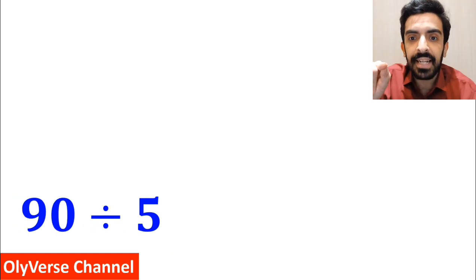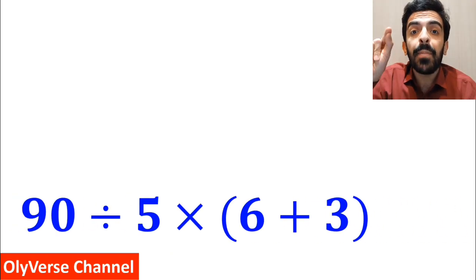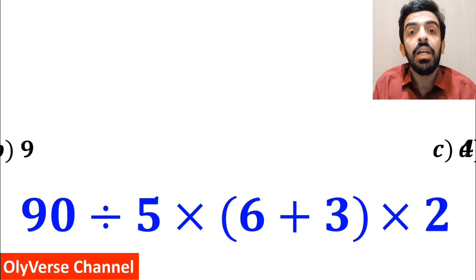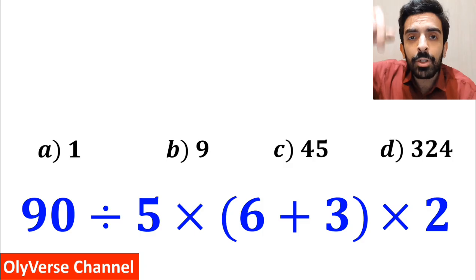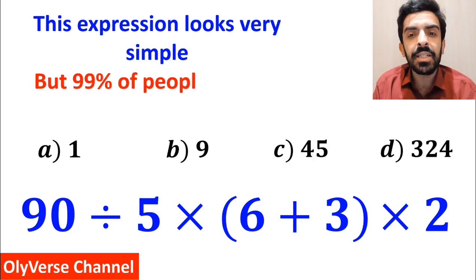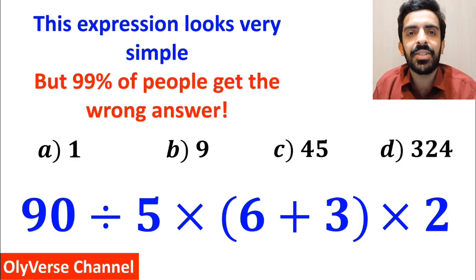What is the value of the expression 90 divided by 5 multiplied by open parenthesis 6 plus 3 closed parenthesis and again multiplied by 2? Which option do you think is the correct answer to this question? This expression looks very simple, but 99% of people get the wrong answer.